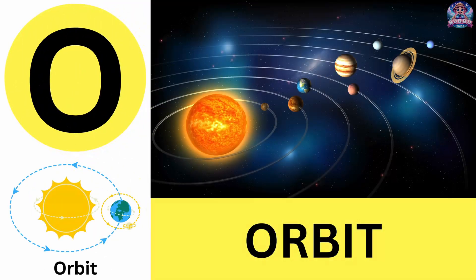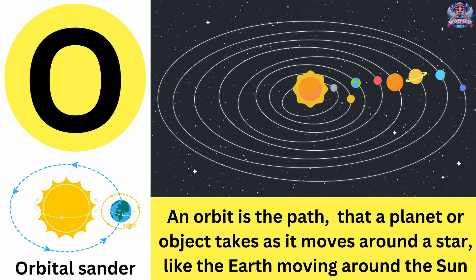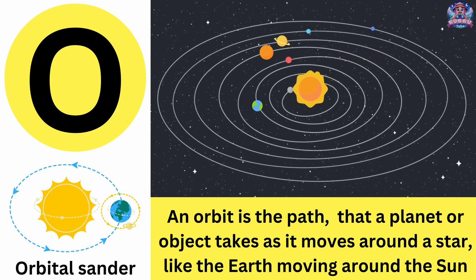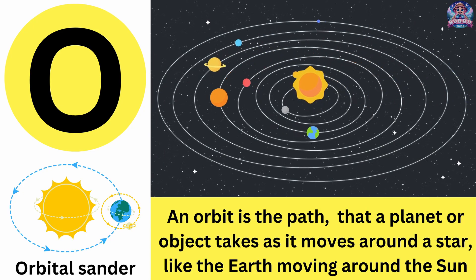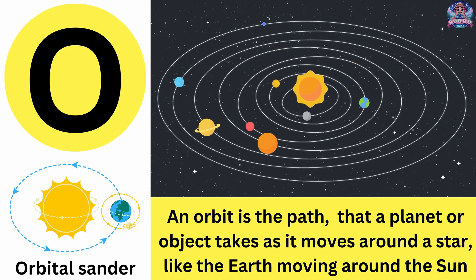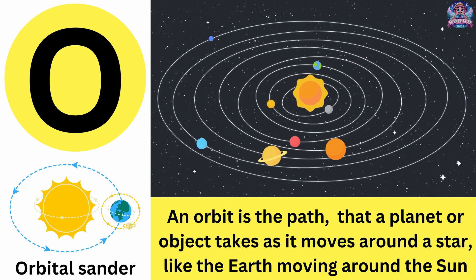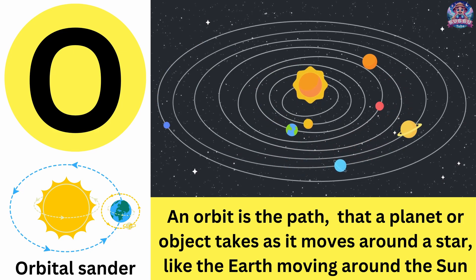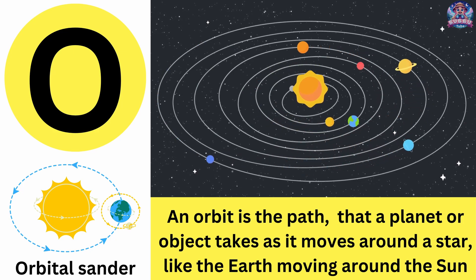O. O is for orbit. An orbit is the path that a planet or object takes as it moves around a star, like the Earth moving around the sun. Orbit.